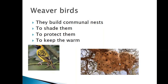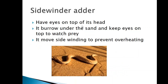This picture shows what a communal nest looks like. Our next animal is a sidewinder. This is a type of snake. This snake has eyes on top of its head, and it buries itself under the sand and keeps its eyes out so that it can watch its prey. When it's not hidden, prey would just run away from it — that's how it is able to get its food.